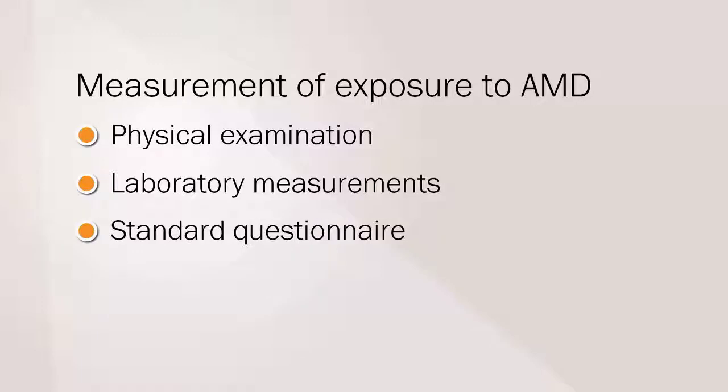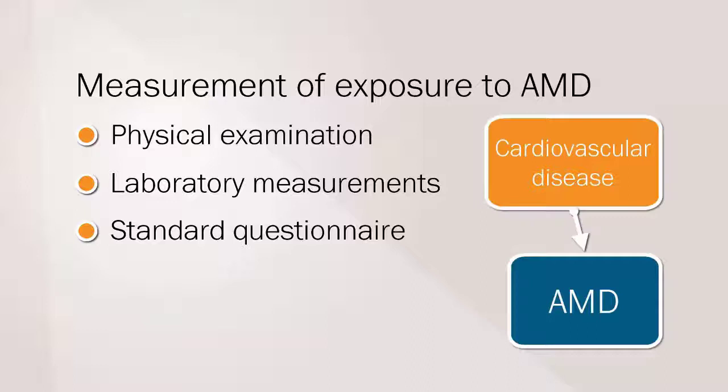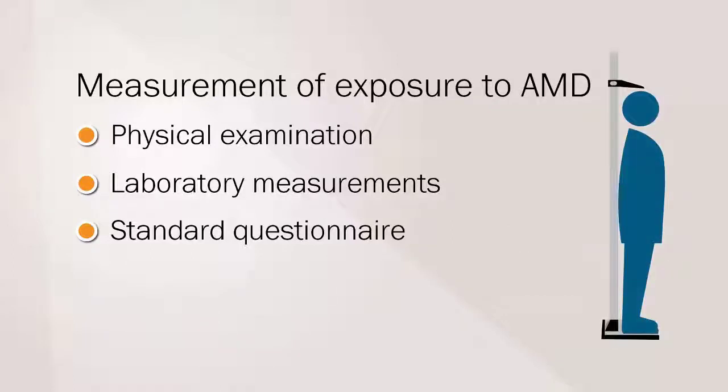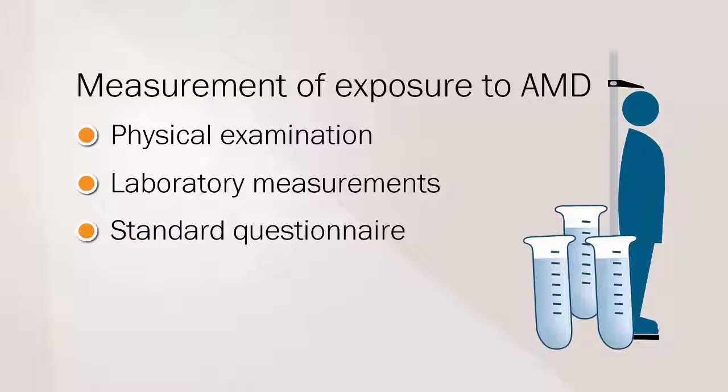The exposures must be accurately measured. The main association being investigated in the study was between cardiovascular risk factors and AMD. But other exposures, known and unknown risk factors, were also gathered. The researchers asked questions on exposures such as smoking and alcohol consumption. They measured height and weight using the physical examination and blood variables from the laboratory measurements.